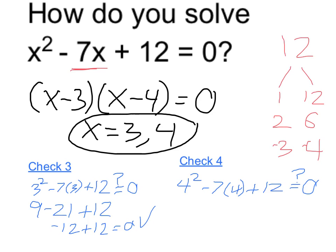And for 4, I have 16 minus 7 times 4 is 28, plus 12. 16 minus 28, again, is negative 12, and plus 12 equals 0.